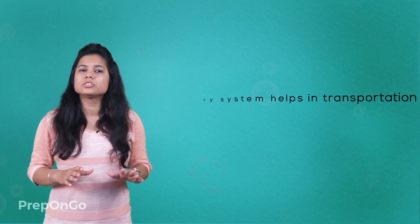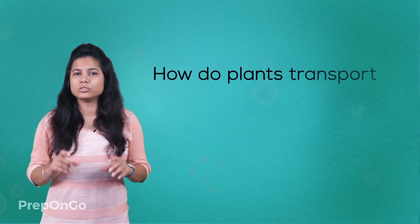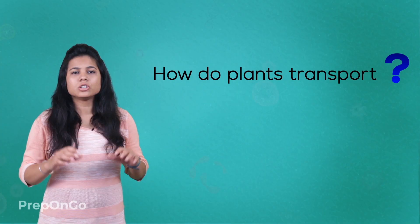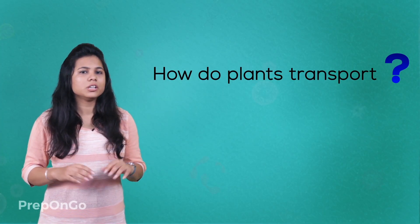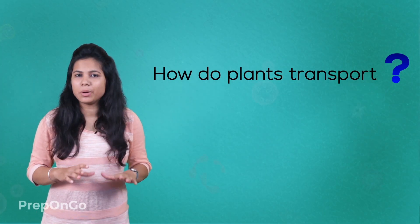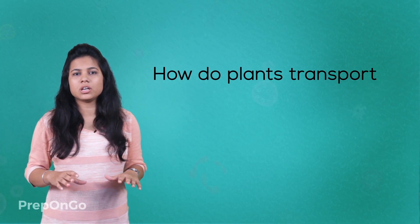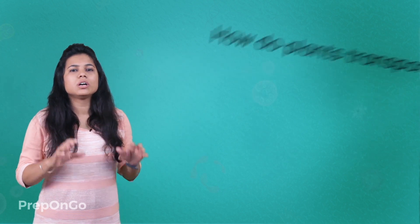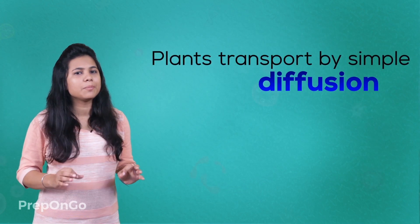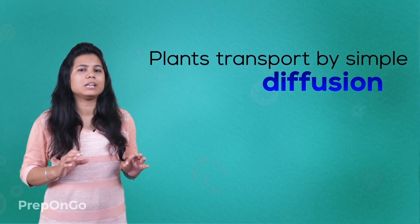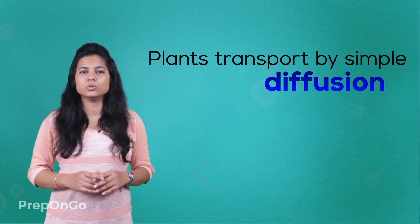Plants also need transport of food and water to different parts of the plant. How do they do that? They do not have blood for this process, so they follow a simple process which we call diffusion.